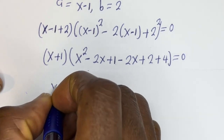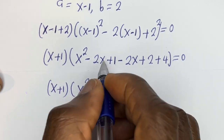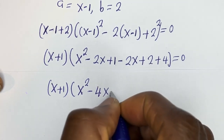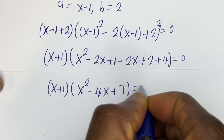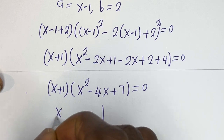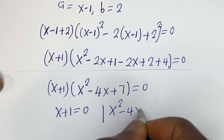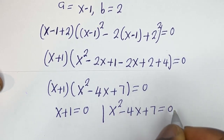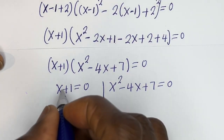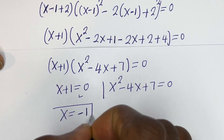From the corrected factoring, we have (x plus 1) bracket x squared minus 2x minus 2x, that is minus 4x, plus 1 plus 2 plus 4, that is plus 7, equals 0. There are two cases: the first is x plus 1 equals 0, and the second is x squared minus 4x plus 7 equals 0. From the first case, x is equal to minus 1, which is our first value of x.